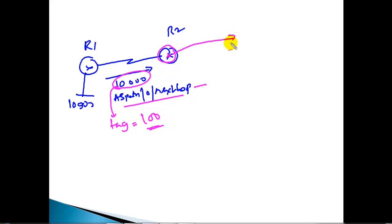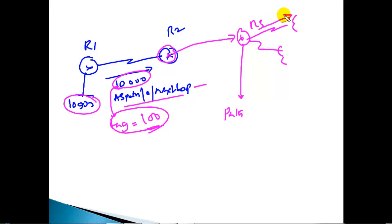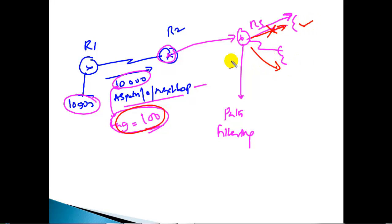Router 2 forwards the routes to router 3 along with the tag information. Router 3 can then do path manipulation — for example, if router 3 connects to two links, it can match these routes not based on the prefixes but based on this tag. We can apply local preference to prefer a route, do route filtering, or specify that routes tagged with 100 should not be advertised to another autonomous system. This is what we call BGP communities — a method of tagging routes that carries along with the routing information.